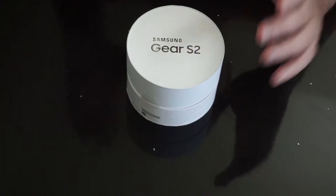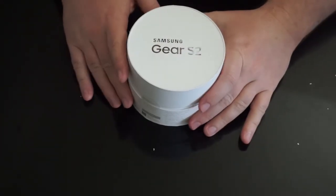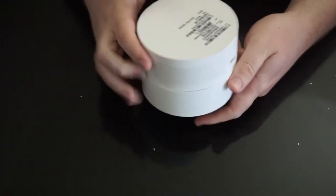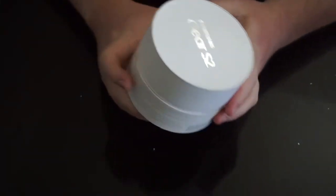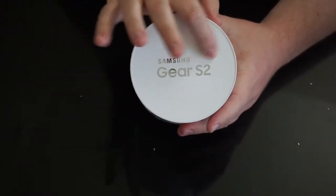So yeah, here we have the Samsung Gear S2 smartwatch in its case. I'm going to take a quick look at this very cylinder-like case. Actually, it literally is a cylinder.